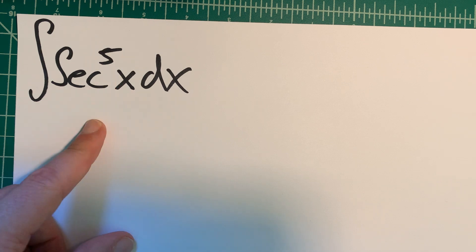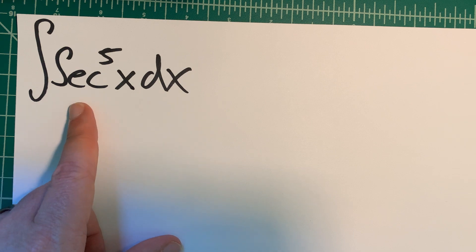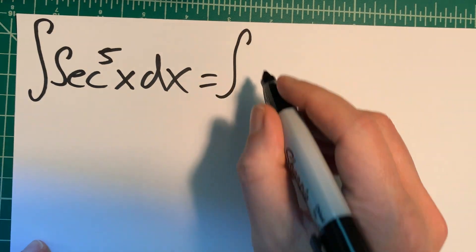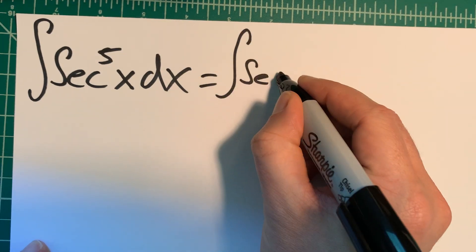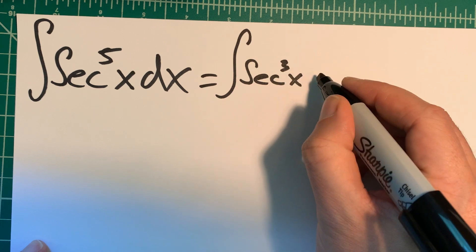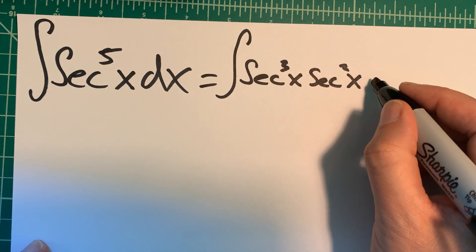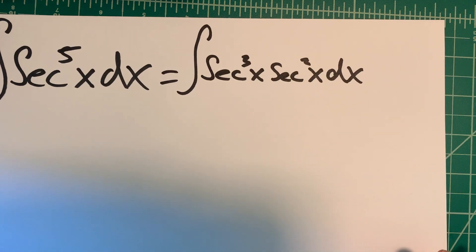So how am I going to get secant to the fifth? The first thing to do, just like we did with secant to the third, is I'm going to break it up. I'm going to break it up into two functions, and then I can use parts. So I'm going to do secant to the third x and then secant squared x dx.